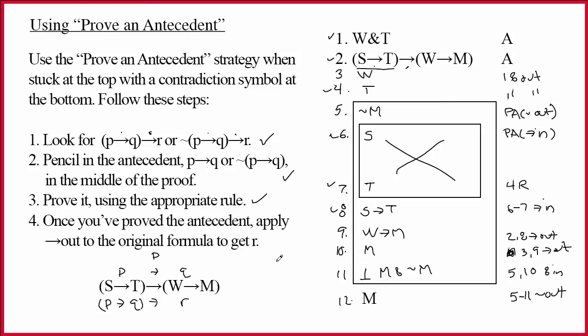So, quick review. Stuck at the top with the contradiction symbol at the bottom. You go look for a line of the form P arrow Q arrow R. You pencil in the antecedent part to set up the arrow out. You prove it. And then you go back and you do the arrow out. And then you continue the proof. I hope you've enjoyed this strategy.